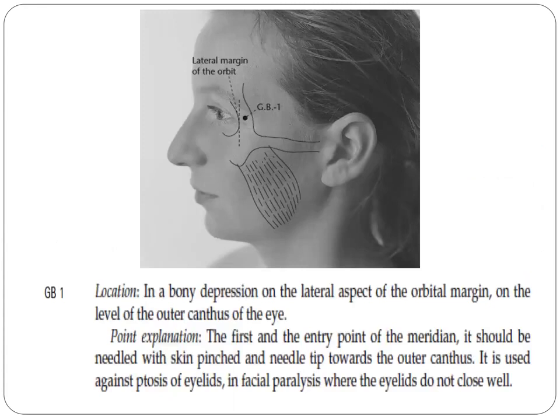Let's start exploring the important points of the gallbladder meridian. First up is GB1. It is located in a bony depression on the lateral aspect of the orbital margin, on the level of the outer canthus of the eye. This is the first point and the entry point of the meridian, needled with skin pinch at the middle tip towards the outer canthus. It is used against ptosis or drooping of eyelids, and in facial paralysis where eyelids do not close well.